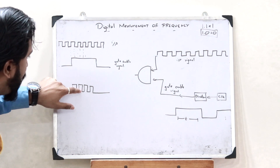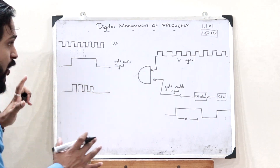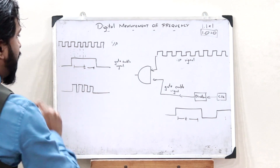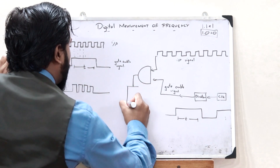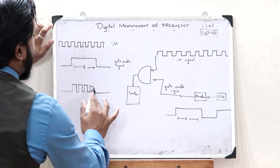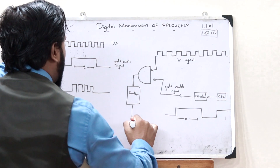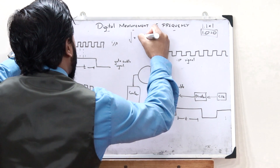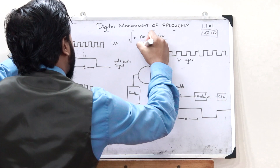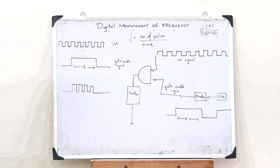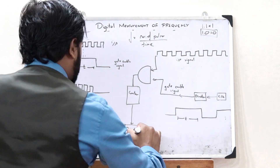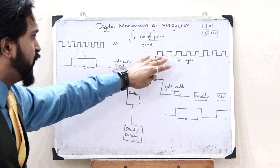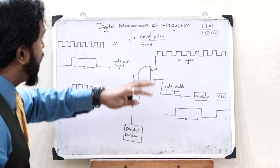Here we can count the number of pulses present. The time period of this particular signal is known to us, so we pass this through a counter which counts the number of pulses present in this particular time period. If we know the number of pulses, the frequency is given by the formula: frequency = number of pulses / time. With this simple formula we can obtain the frequency of this signal, which is then passed through a display showing the frequency value.